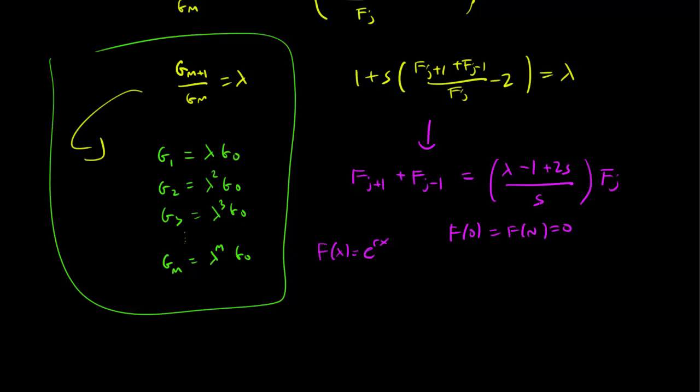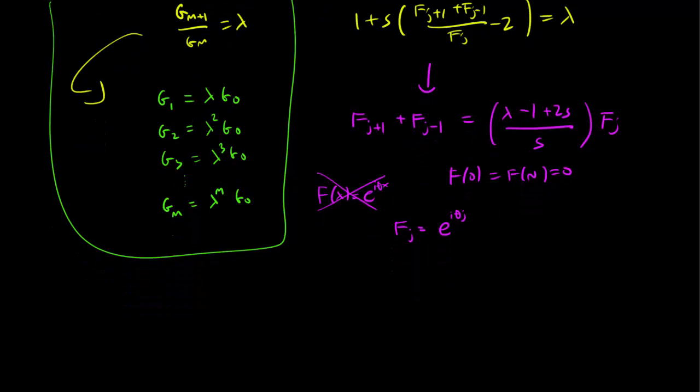So let's replace the r with i theta. So the discrete version of this should clearly be f_j equals e to the i theta j, since we are in the discrete world. So let's see what that does to our equation. We plug it in. So we obtain e to the i theta (j+1) plus e to the i theta (j-1) equals lambda minus 1 plus 2s over s times e to the i theta j.